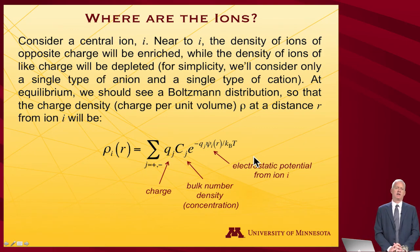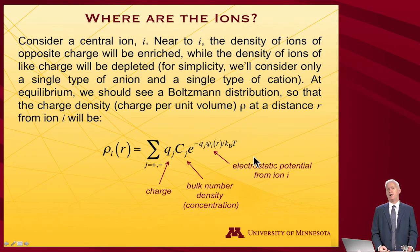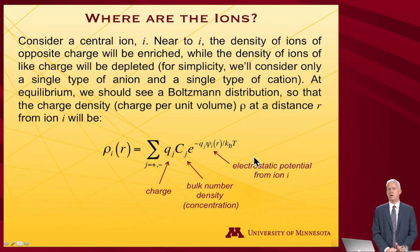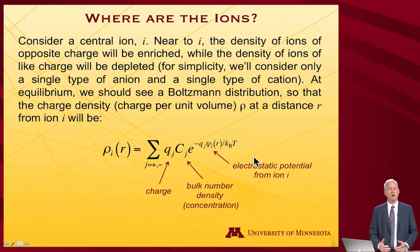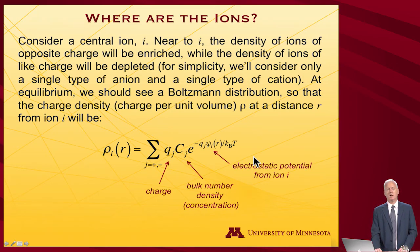To begin and ask where the ions are, consider a central ion I. Near ion I, the density of ions of opposite charge ought to be enriched compared to ions of the same charge, because opposite charges attract and the universe prefers lower energy. The density of ions of like charge is correspondingly depleted.